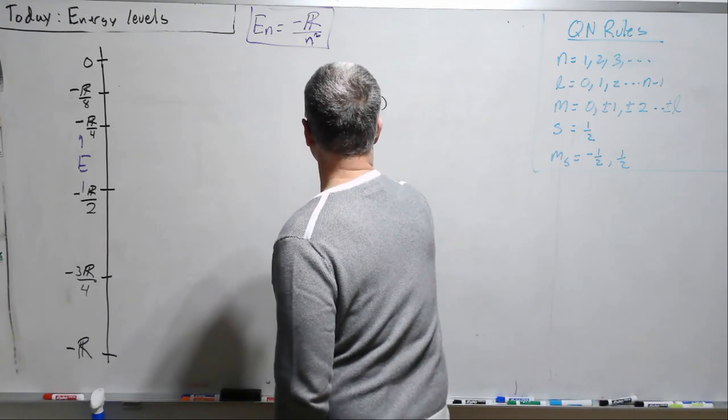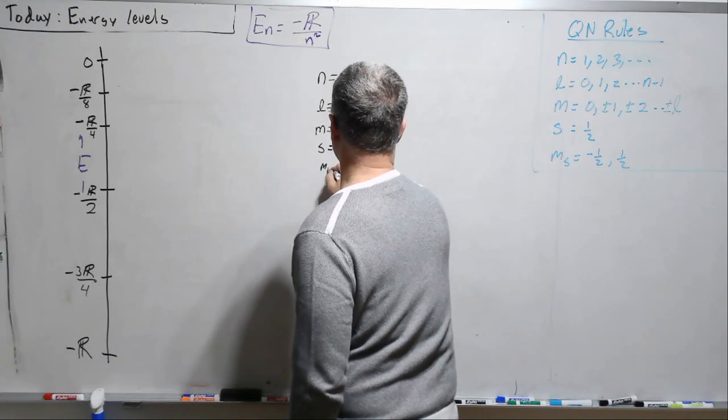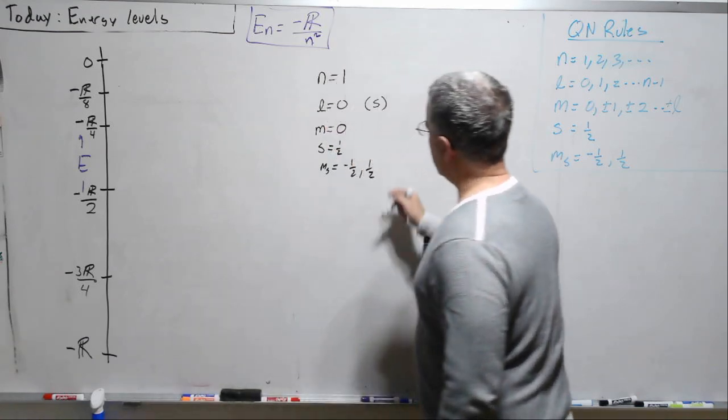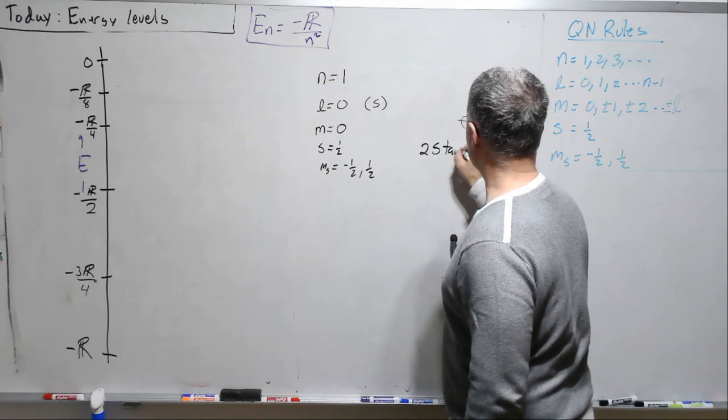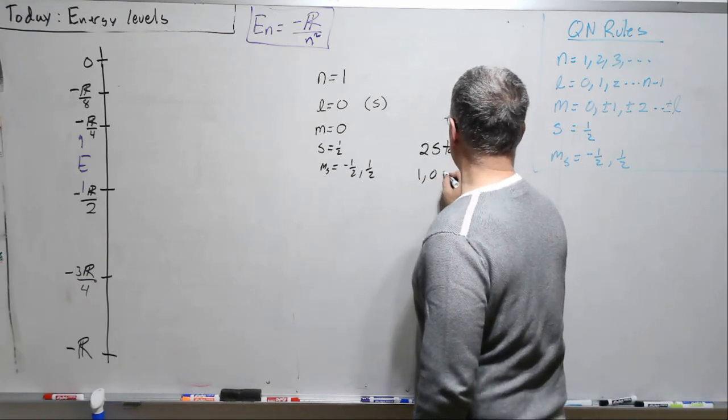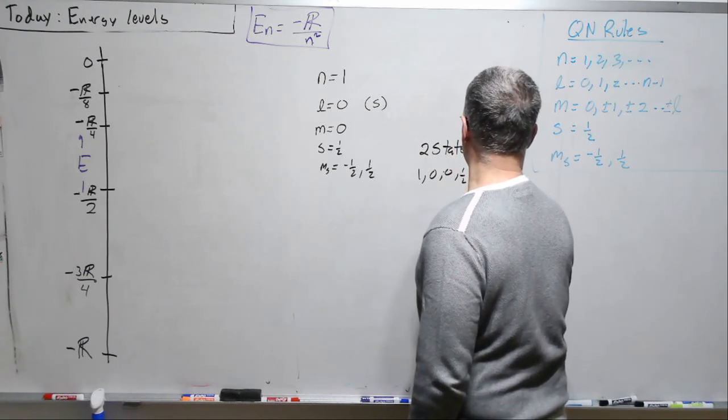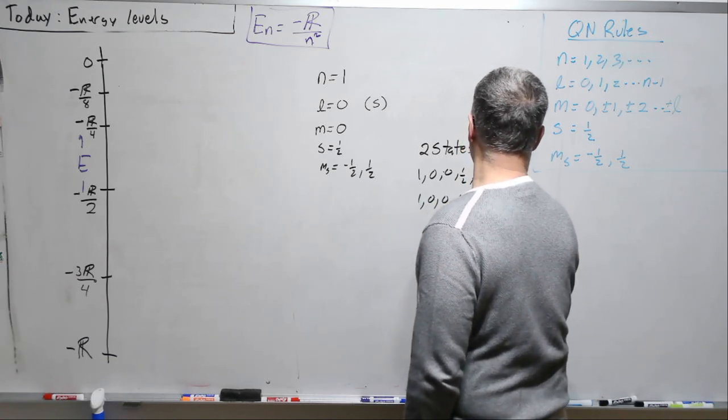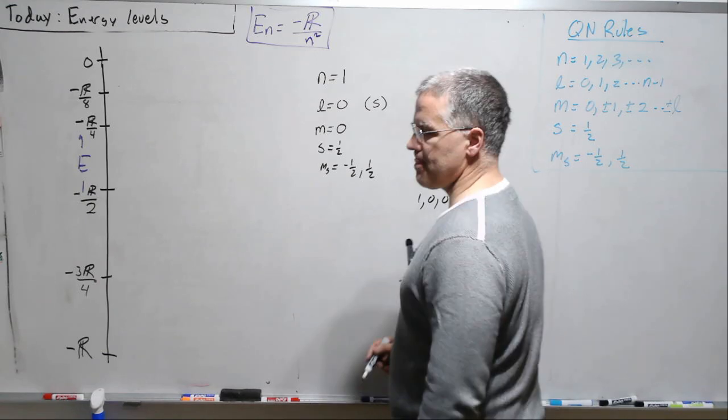s is always 1/2 and ms is equal to minus 1/2 or plus 1/2. So we have two states: the 1, 0, 0, 1/2, minus 1/2 state, and the 1, 0, 0, 1/2, 1/2 state. Two states.